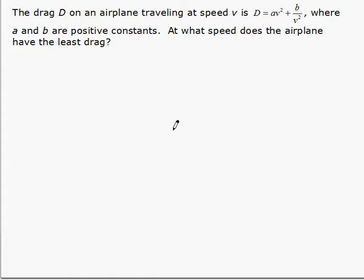This example is about minimizing drag on an airplane. The drag D on an airplane traveling at speed v is given by this equation, where a and b are positive constants. At what speed does the airplane have the least drag?